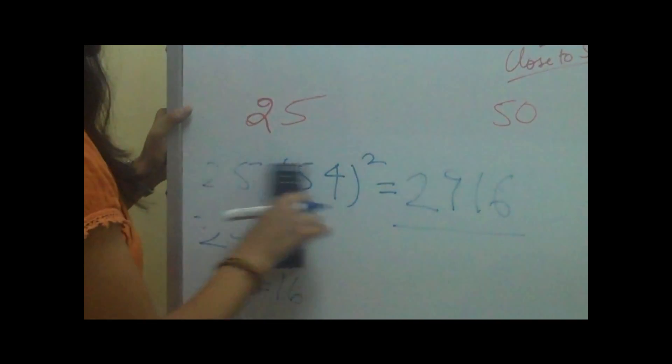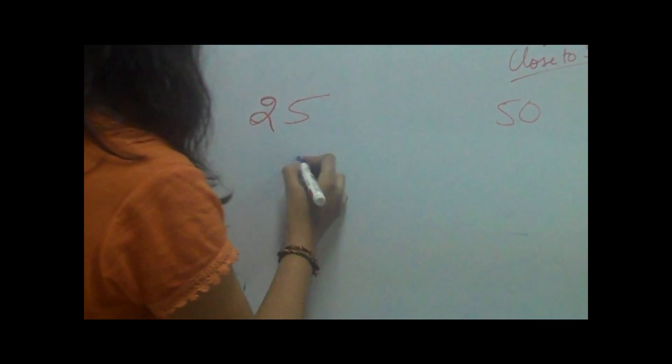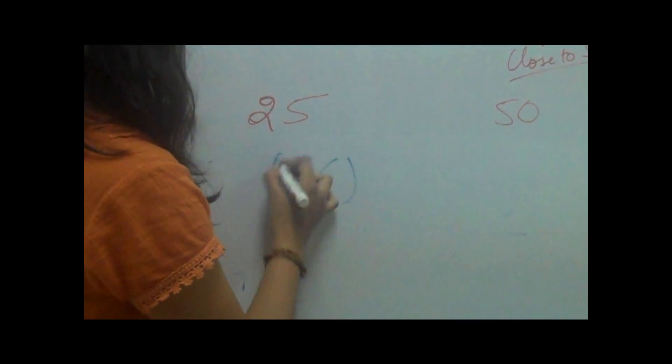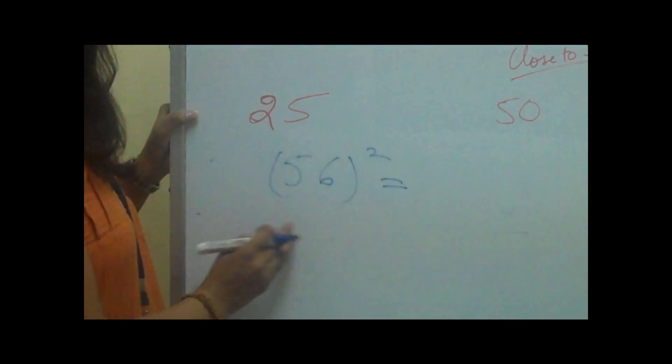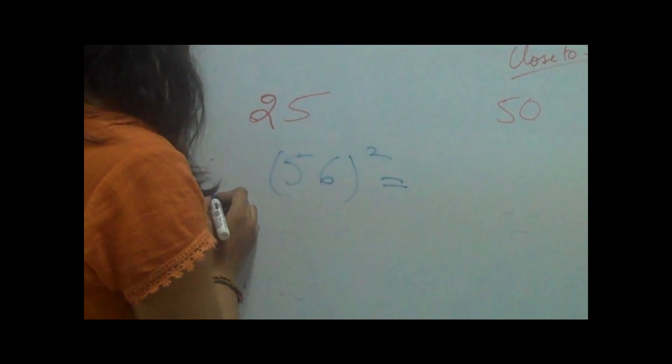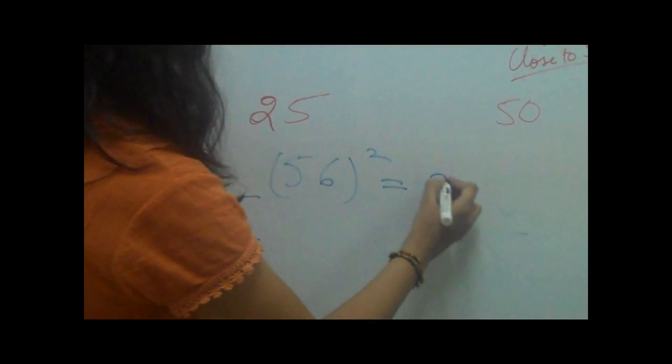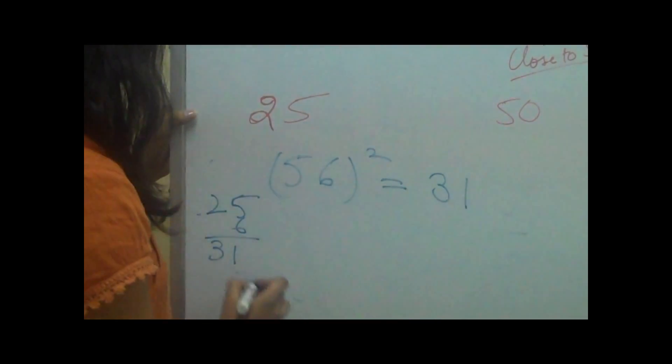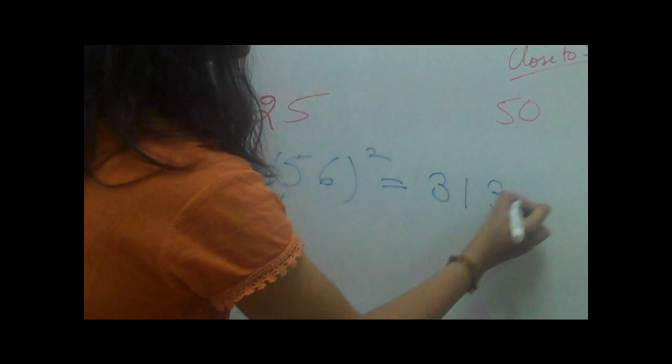Let's take another example. If we have a number 56 and we want to square it. 56 is 6 more than 50. We'll add 6 in 25 which makes 31 and then we'll square the 6 which makes 36. Right over here.